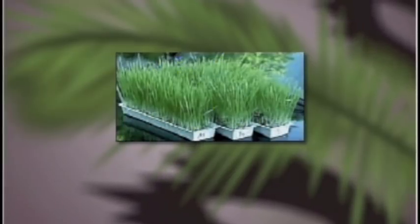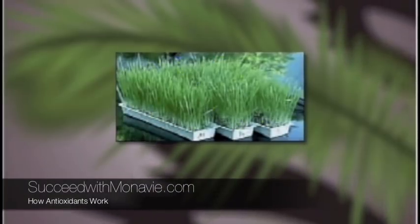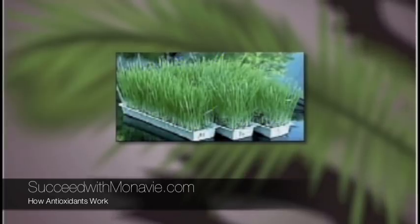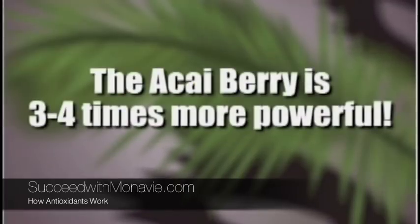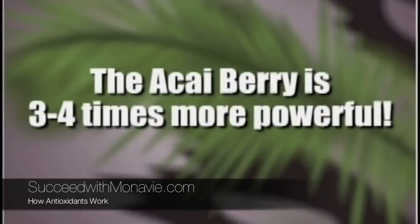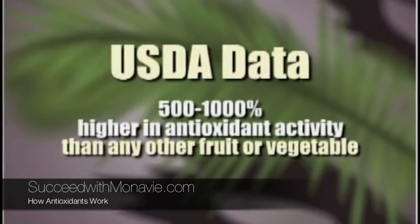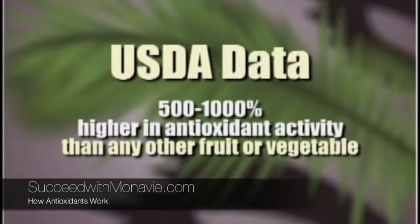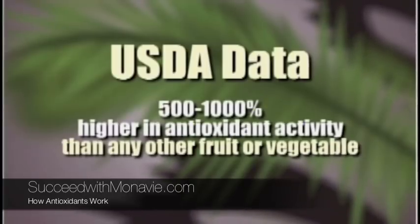Historically, the greatest antioxidant in controlling superoxide free radicals was sprouted wheatgrass. A lot of people are familiar with wheatgrass but probably don't know why they take it — it certainly isn't for the taste. When comparing the acai berry to sprouted wheatgrass, it was found that the acai berry was 3 to 4 times more powerful in controlling superoxide free radicals. In fact, based on USDA data, the acai berry is 500 to 1000% higher in antioxidant activity than any other fruit or vegetable.